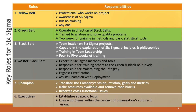Green Belts are often part-time professionals with a variety of duties, including assisting on Black Belt projects and leading smaller projects. They are trained in problem-solving techniques and the tenets of the DMAIC project model. When involved in Black Belt projects, their duties include gathering data, executing experiments, and analyzing information. Black Belts are full-time team leaders for Six Sigma projects. According to the Six Sigma Academy, Black Belts can save a business an estimated $230,000 on each project they lead, and they can complete four to six projects per year.